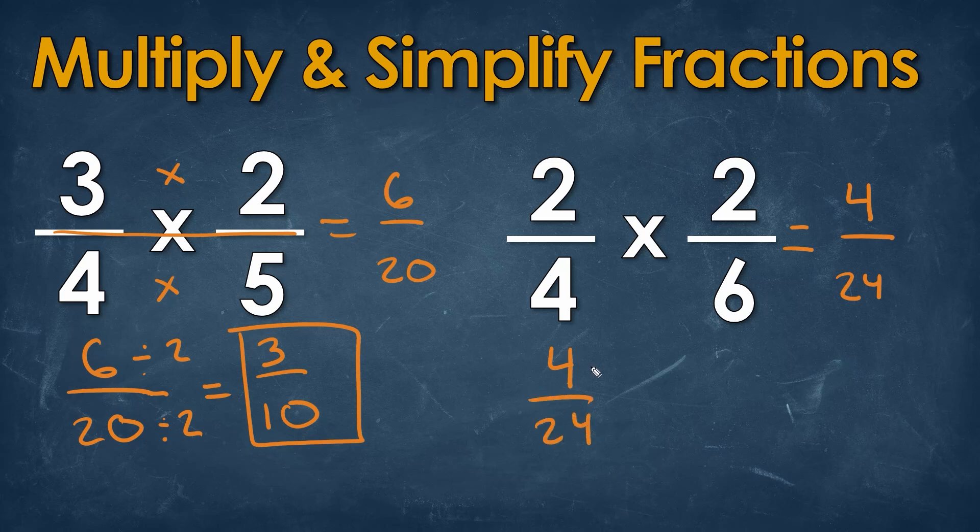Now, we can do 2, but we could also do 4, right? Because 4 divided by 4 will give us a value of 1, and we can also divide the bottom by 4, which will give us a value of 6. Now, if you didn't notice that first, you can always divide it by 2, and then do another simplification round again by dividing another set by 2 to get that same answer.